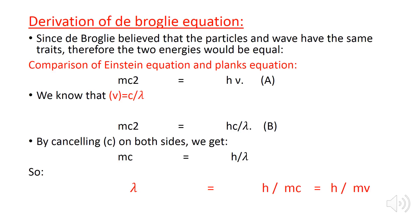Now, let's start the derivation of de Broglie's equation. Since de Broglie believed that the particle and wave have the same traits, therefore the two energies would be equal.